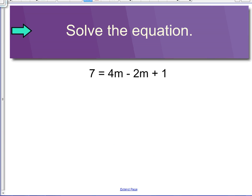In this one, we have 7 equals 4m minus 2m plus 1. So in this case we are going to try and get all our m's over here and our numbers over here. We're going to add those m's together, or in this case subtract them. So it would be 7 equals 2m plus 1.